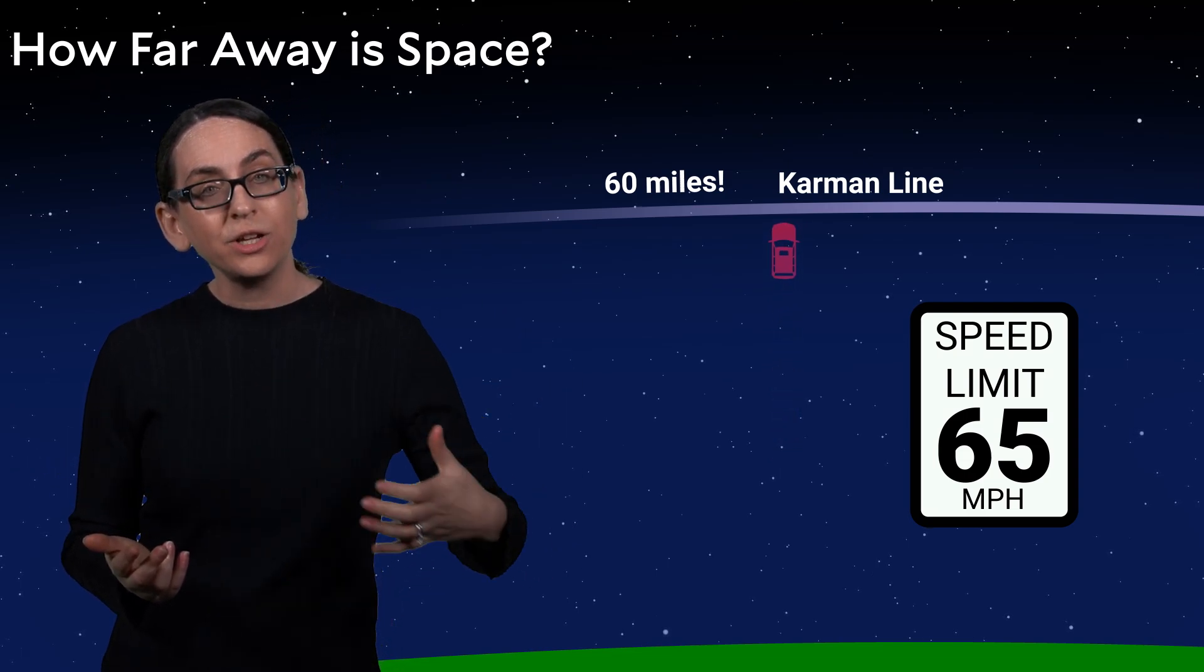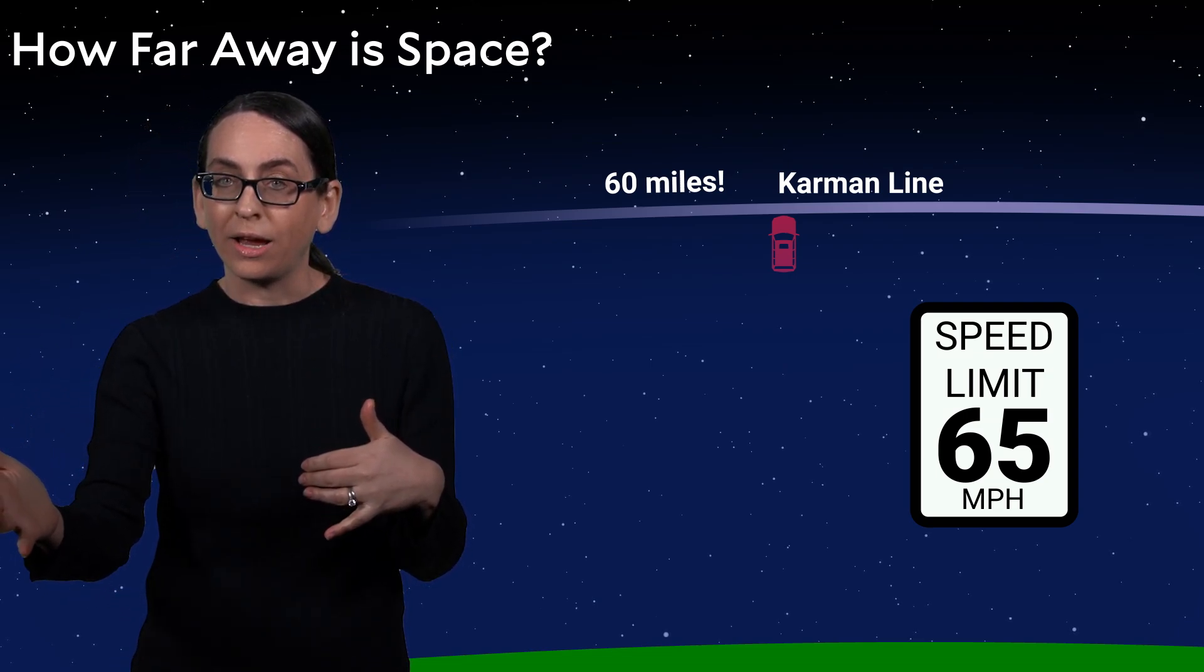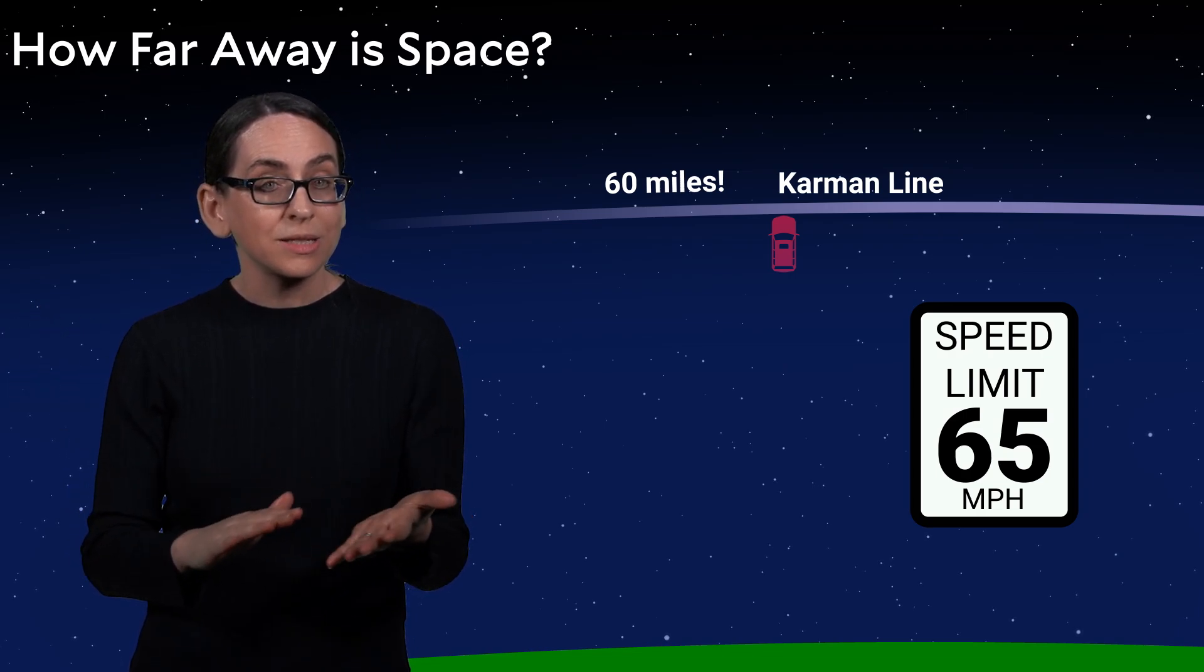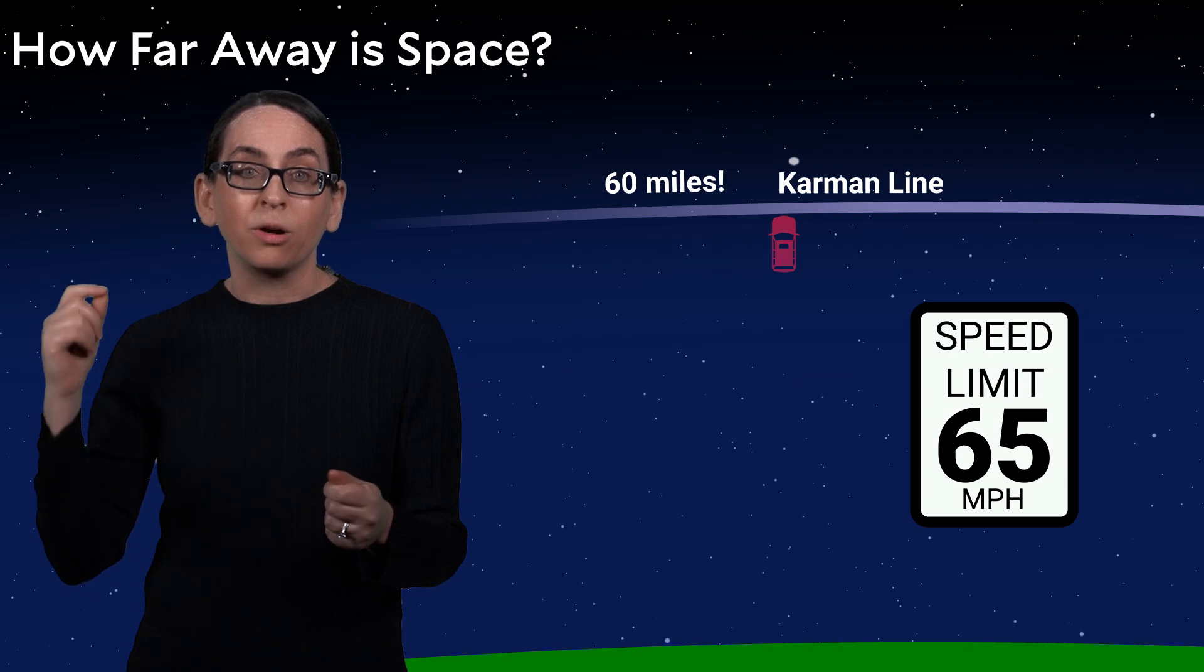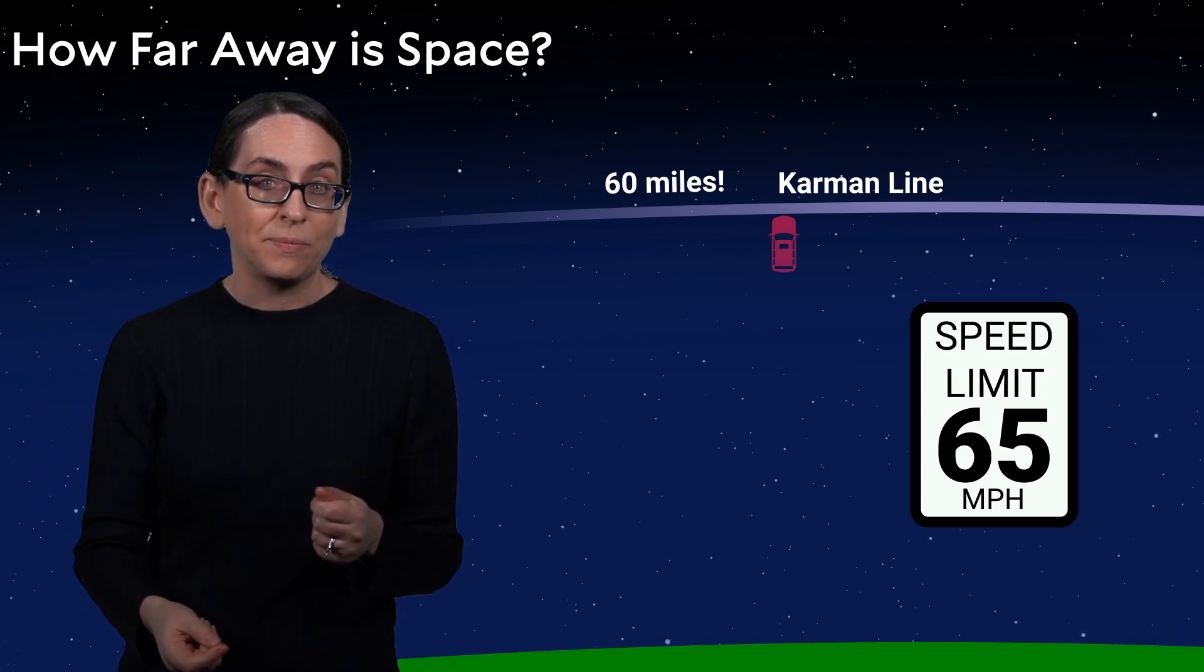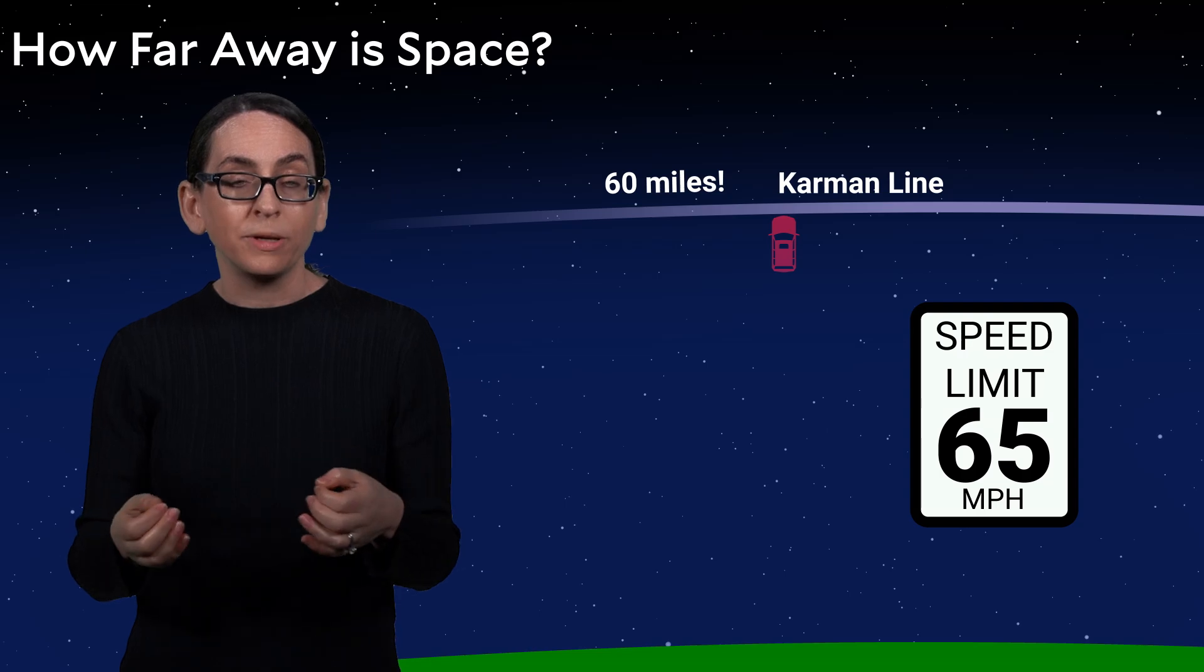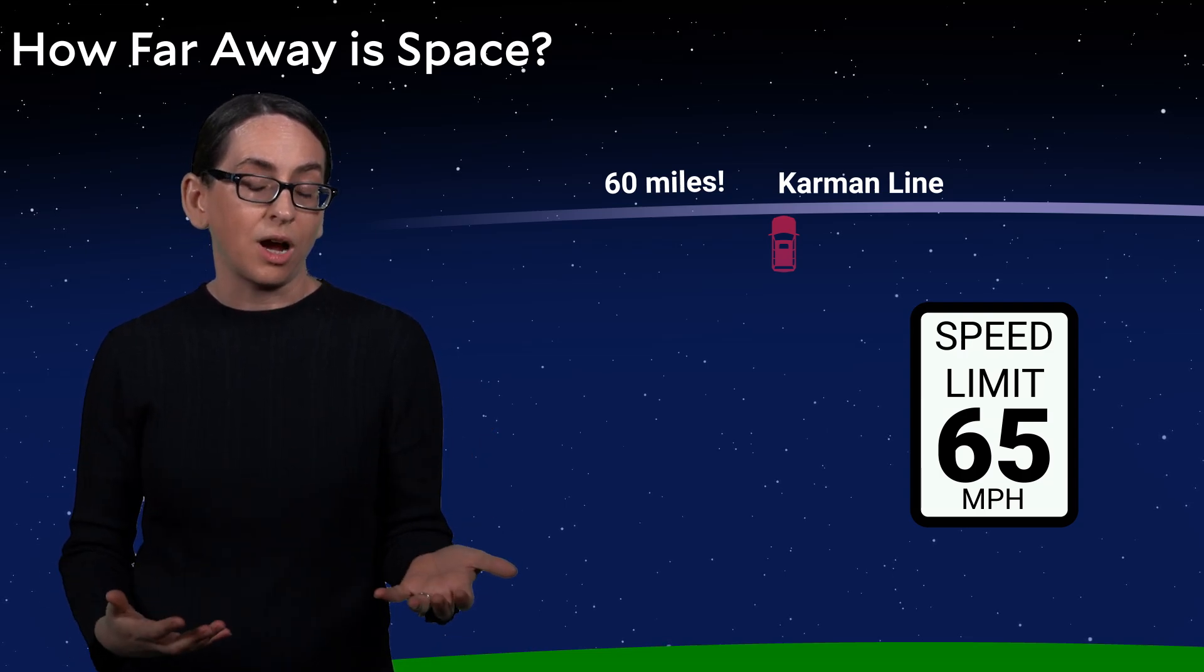And so I want to change your mental image away from space being super far away and things sort of gently floating overhead to something more like this, where space is not all that far away. It's an hour drive and objects in orbit are moving really fast overhead. And in the next segment, we'll define the names of various different orbits around Earth and come up with a way to describe and quantify these different kinds of orbits.